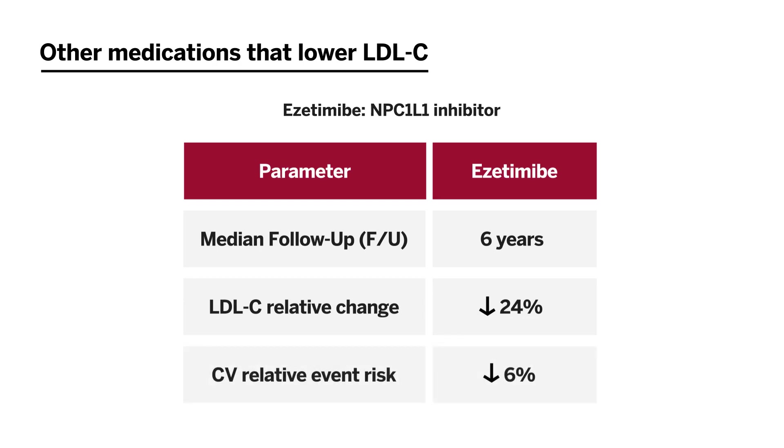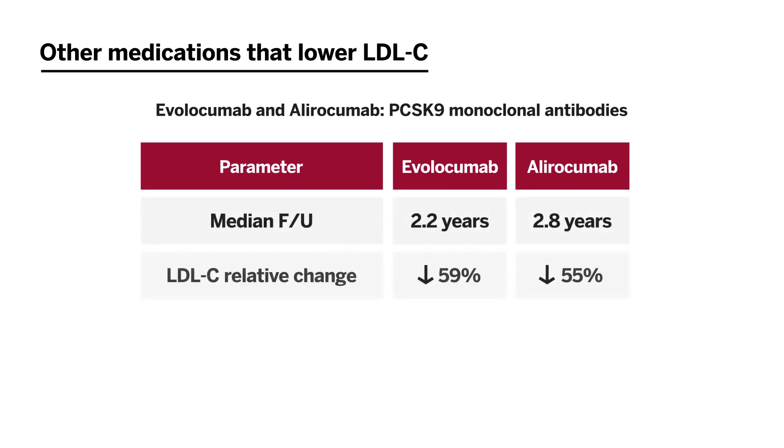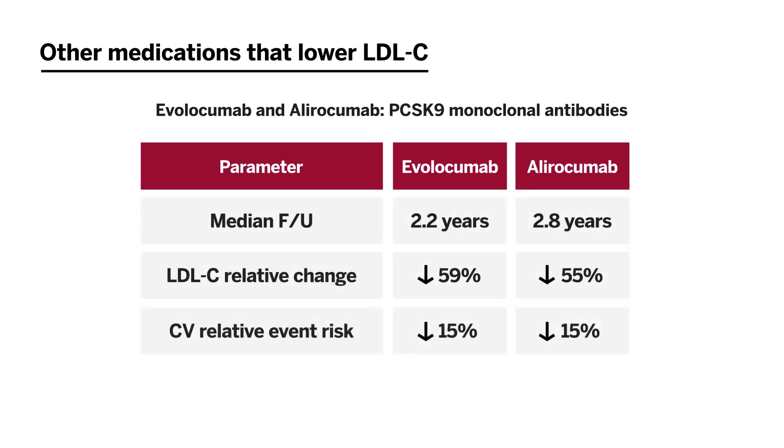Two other related medicines — PCSK9 monoclonal antibodies — over a shorter study period led to greater LDL cholesterol lowering and greater cardiovascular disease risk reduction. Some of the differences when comparing with statin clinical trials, which are often carried out for about five years, relate to differences in potency for LDL cholesterol lowering and differences in follow-up duration, making direct comparison of event reduction across all these therapies difficult.